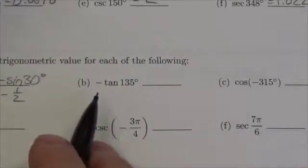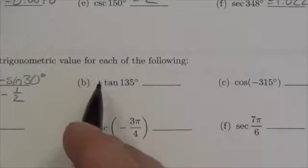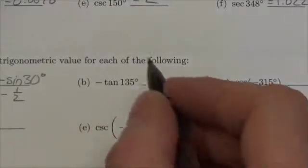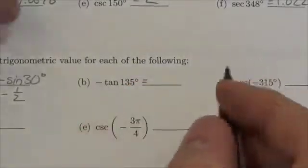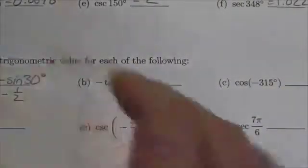So this question you're being asked to come up with the exact value of the negative tangent of 135. Now there is a negative out front that, basically in terms of order of operations, think of it like this: